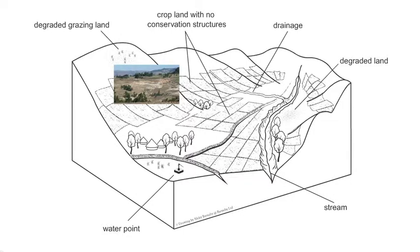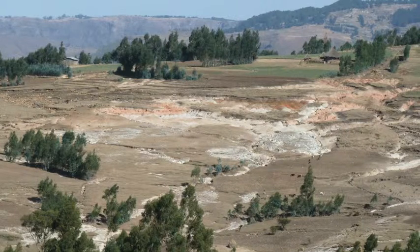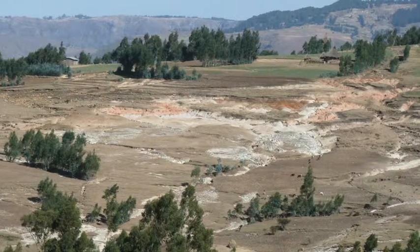At a watershed and landscape level, here we see an illustration of a degraded watershed with no measures to control erosion on cropland, overgrazing, and patches of land so degraded that they have been taken out of production altogether. It can be hard to know where to start and which practices to apply where to tackle these interrelated natural resource management issues.